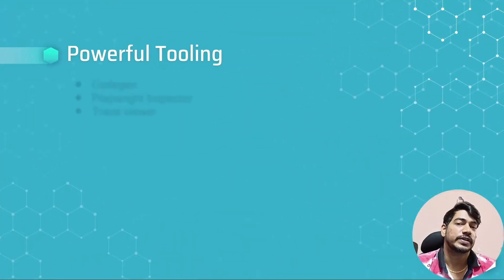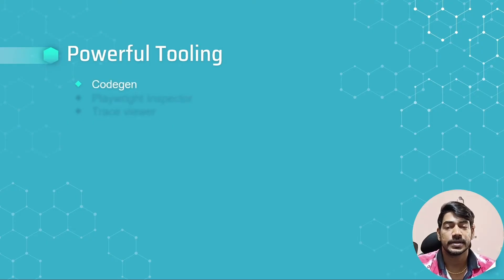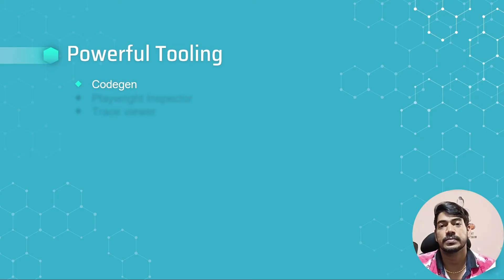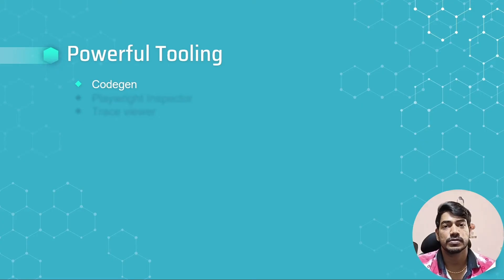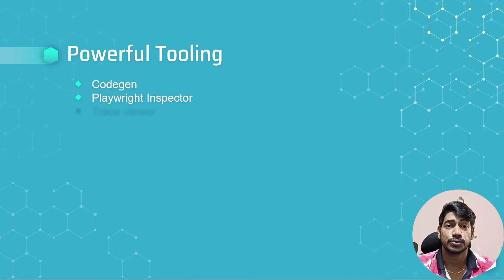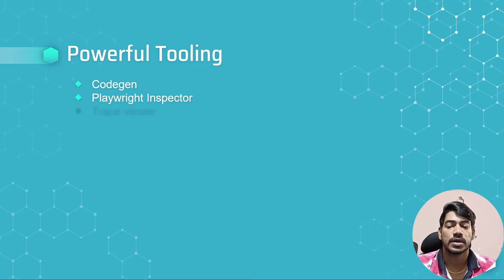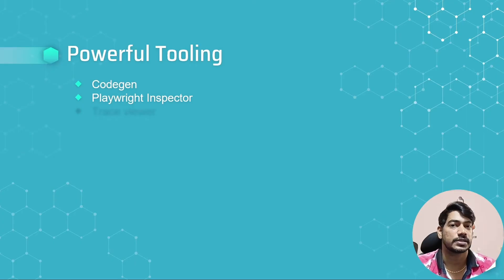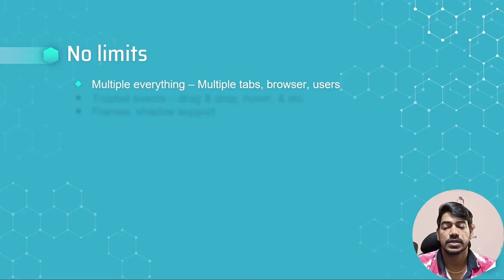Playwright provides powerful tooling. CodeGen generates Playwright code in any language binding — JavaScript, TypeScript, Java, Python, or .NET — by recording your test. The Playwright Inspector is one of the best debugging tools available, better than anything in Selenium, Cypress, or WebDriver in my opinion. There is also the Trace Viewer, similar to tracing, which we'll see in live action as we move forward.